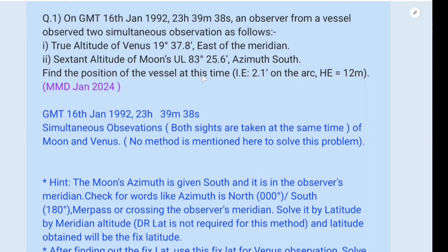Find the position of the vessel at this time. Index error 2.1 minutes on the arc, height of eye 12 meters. GMT is given as 16th Jan 1992, 2300 hours 39 minutes 38 seconds. This is a simultaneous observation - both sights are taken at the same time. Simultaneous observation of Moon and Venus. No method is mentioned here to solve this problem.